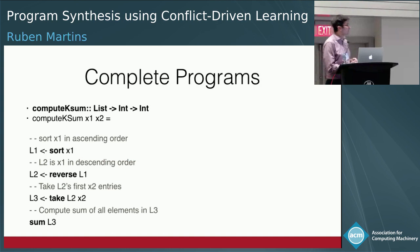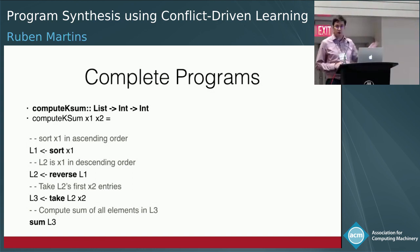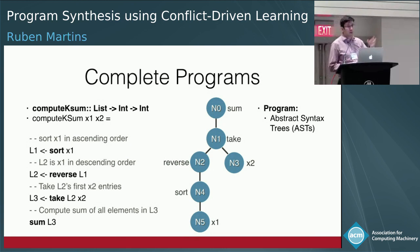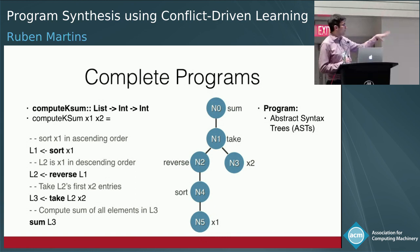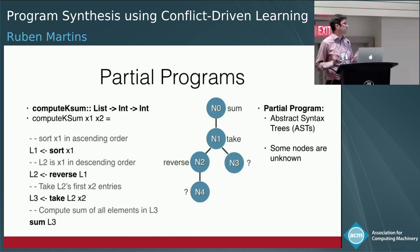How would we solve compute-K-sum using this DSL? Assuming sort only sorts in ascending order, I first sort the list ascending, then reverse it to get descending order, then take the first k elements and sum them. Throughout this talk, I'll represent programs as abstract syntax trees, where each node has a label corresponding to a decision. The root is the program output and the leaves are the inputs. Partial programs have some nodes still unknown.